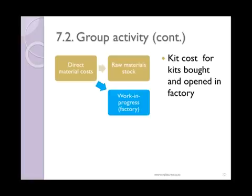The balance can then be taken to work in progress — in other words, your factory. That's the box that has the picture of a factory in it. You can transfer the cost of each kit into the cost for each product. These are the costs of all the kits that you bought, that were opened and that you started making. It doesn't matter if they were finished or not; as long as you started using them, they will be considered part of work in progress.